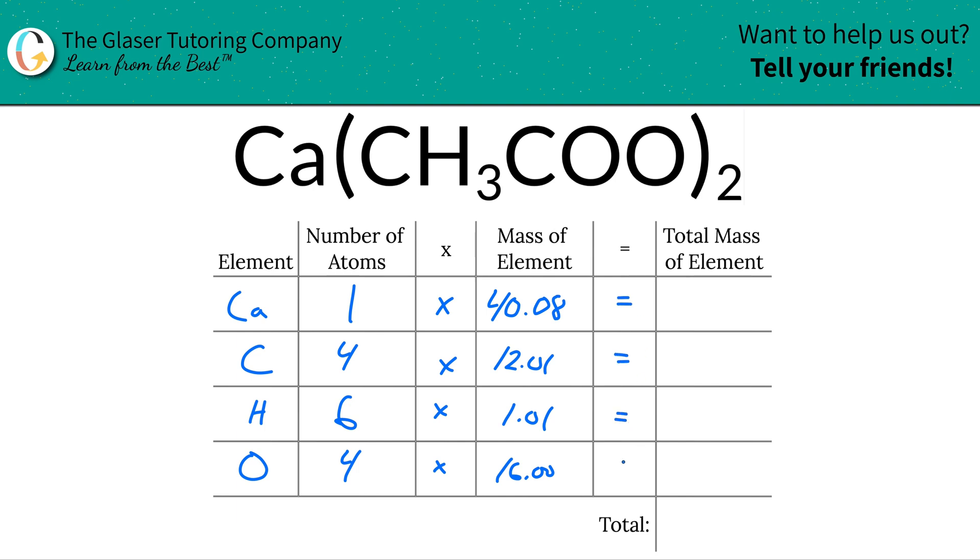Then to find the total mass of each element now in the compound, we're simply going to multiply this row on across. So the total mass of calcium here is going to be 40.08 because it's just one, there's one atom of calcium and this is basically the mass. And then for carbon, there's four atoms.